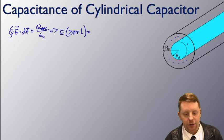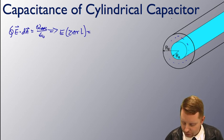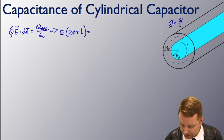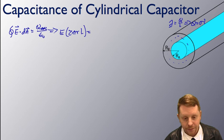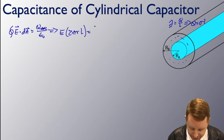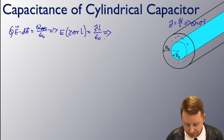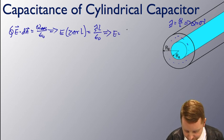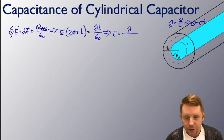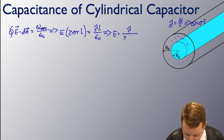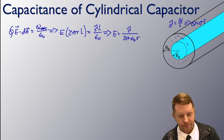The electric field times the area — the circumference of our Gaussian cylinder times its length L, which is 2 pi R L — must equal our charge enclosed. Setting a linear charge density lambda equals Q over L, then Q equals lambda L. Therefore this equals lambda L over epsilon naught, and with a little algebra the electric field equals lambda over 2 pi epsilon naught R.